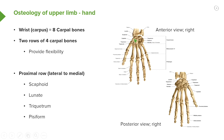These four bones form this proximal row. We can see this on the anterior view, and we can also see them on the posterior view. Again, remember the thumb is lateral. So from lateral to medial, we have scaphoid, lunate, triquetrum, and pisiform.